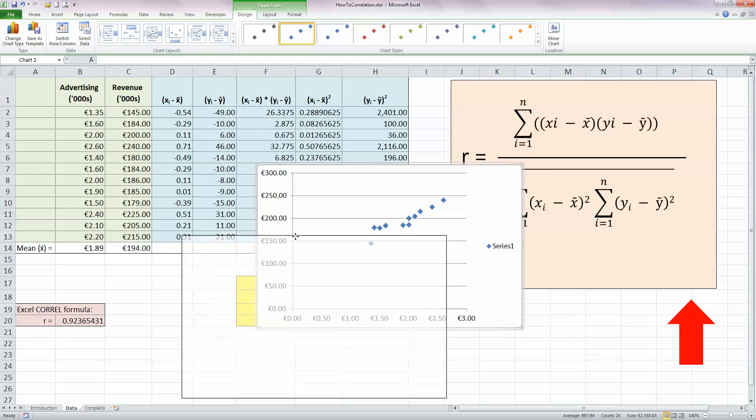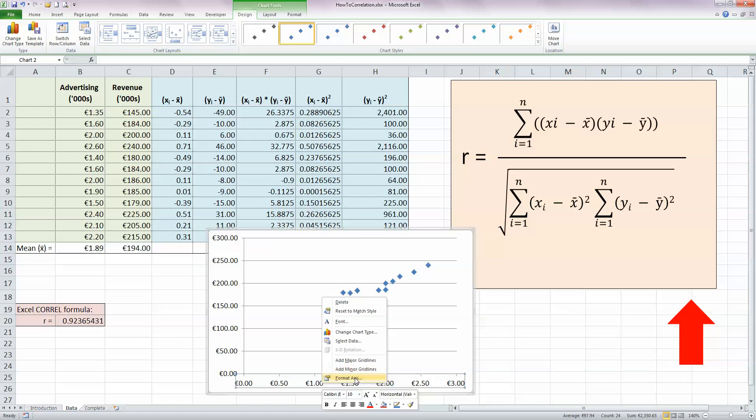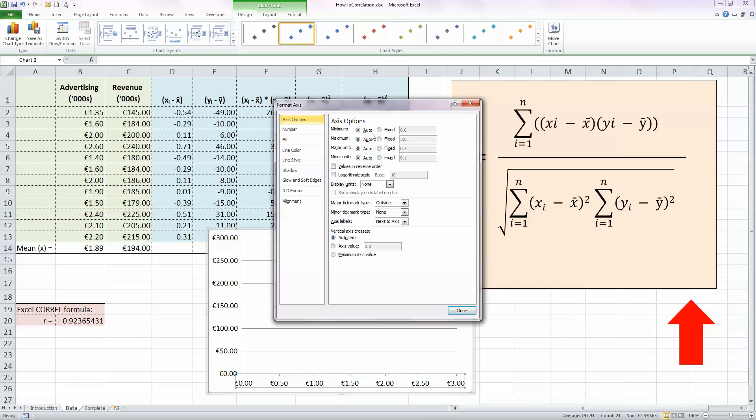Put that into my spreadsheet here. You can see that there is a line of a trend here in the chart. I'm just going to make the x-axis here, format the axis and put in a minimum value of one, just to make it a little bit more spread out.